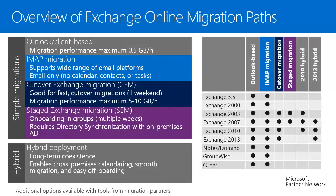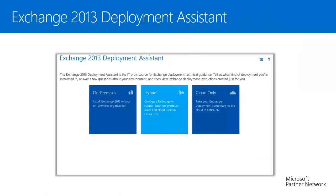For reference, here is a summary of the migration tools and options available with Exchange Online. If you are interested in the big picture, I suggest the presentation Mail Migration Strategies. There is a tool called Exchange 2013 Deployment Assistant, which can be used as an official guide. This assistant asks questions about the customer's environment and suggests a migration path, and can also create step-by-step documentation on what to do.